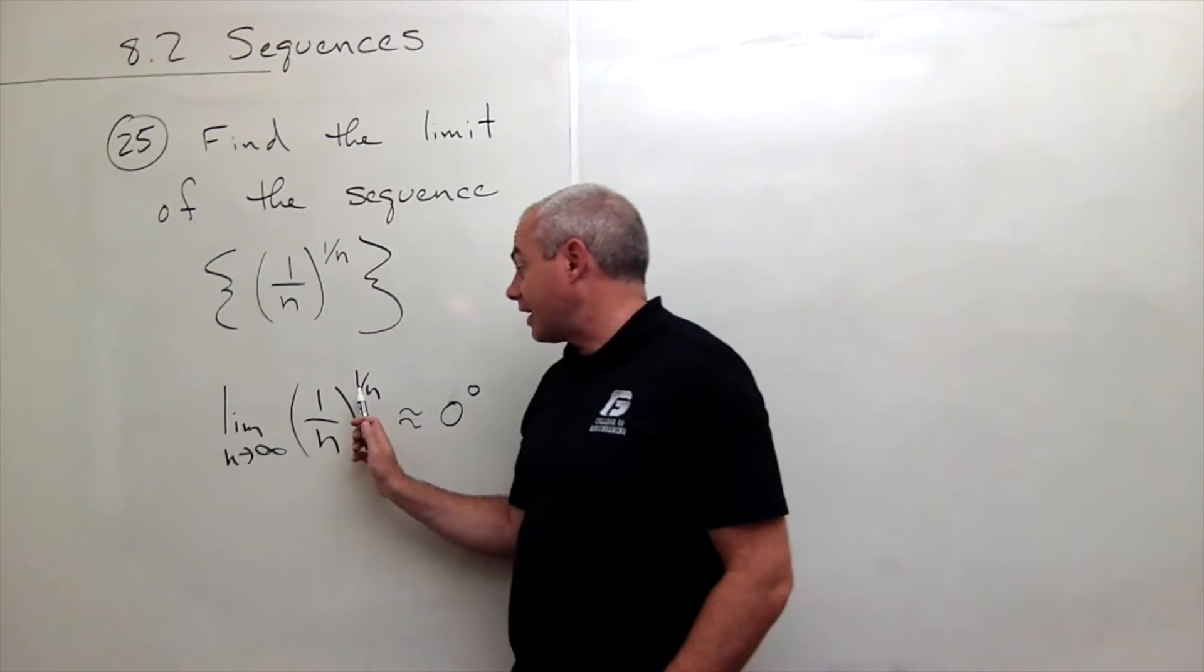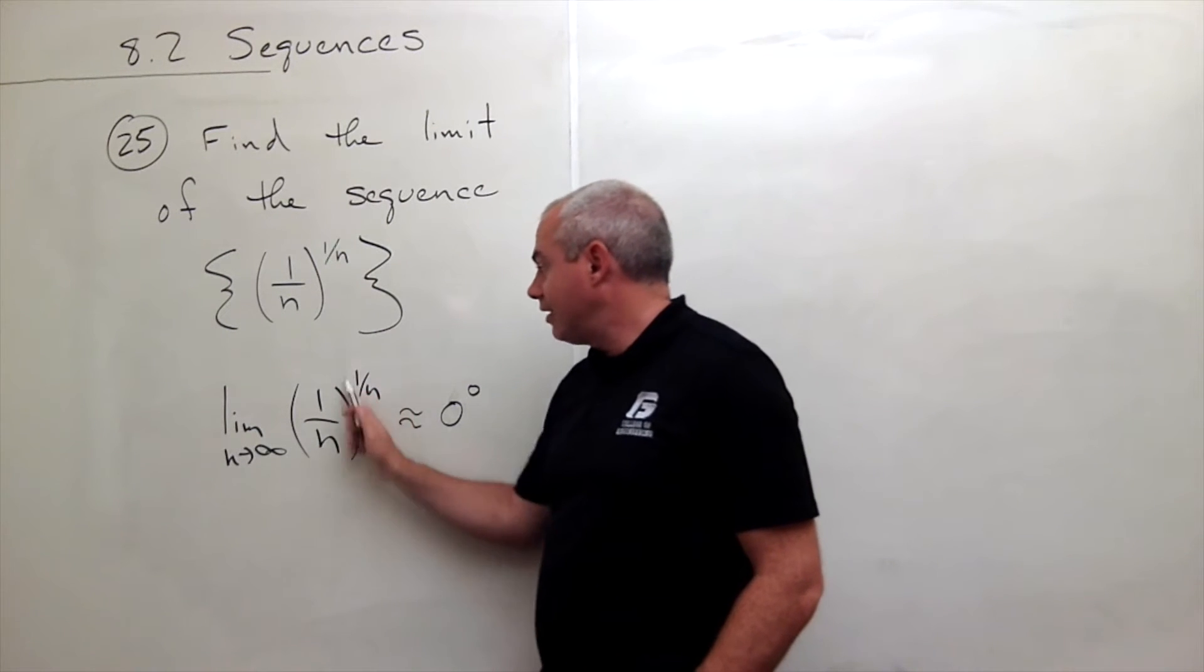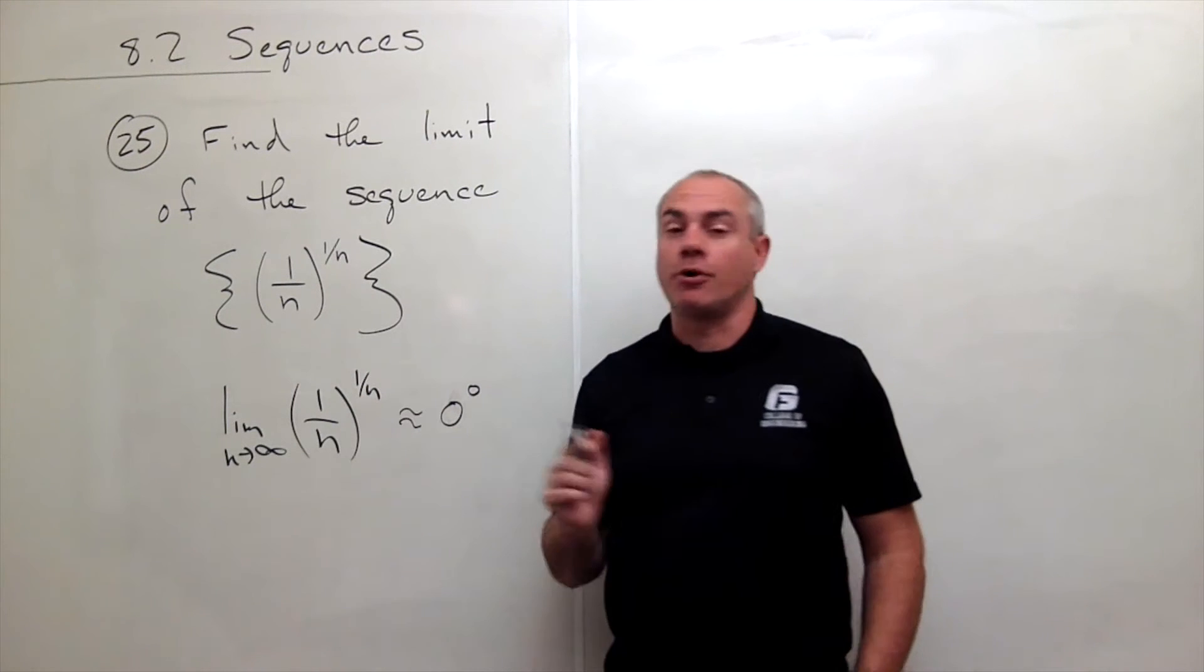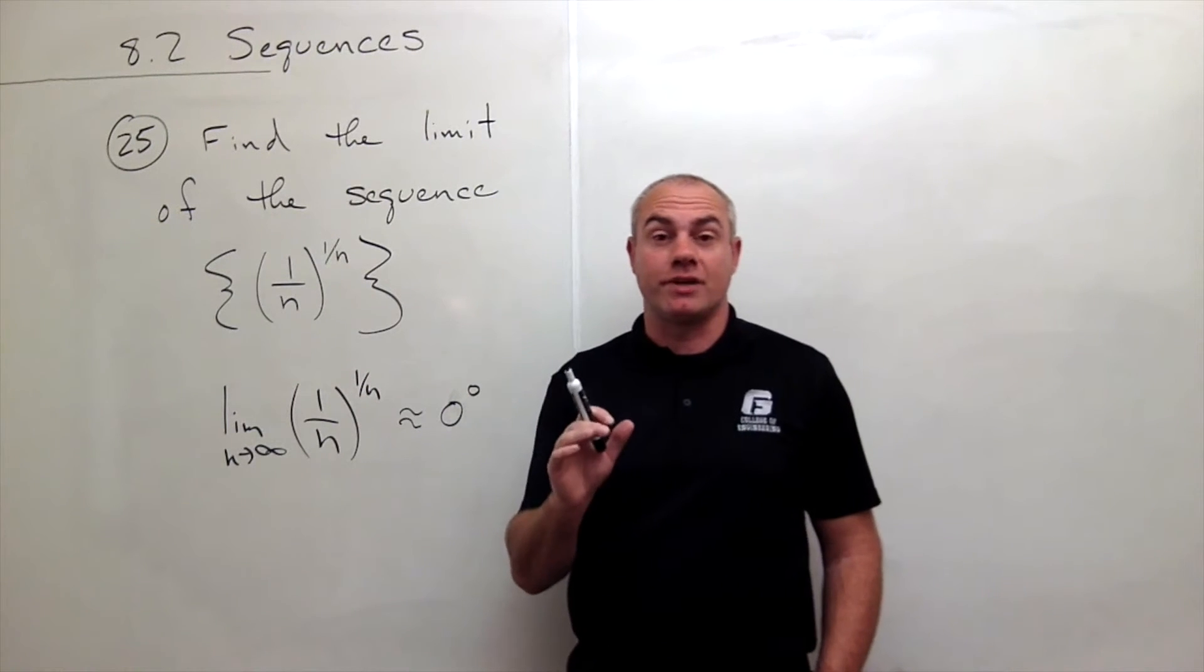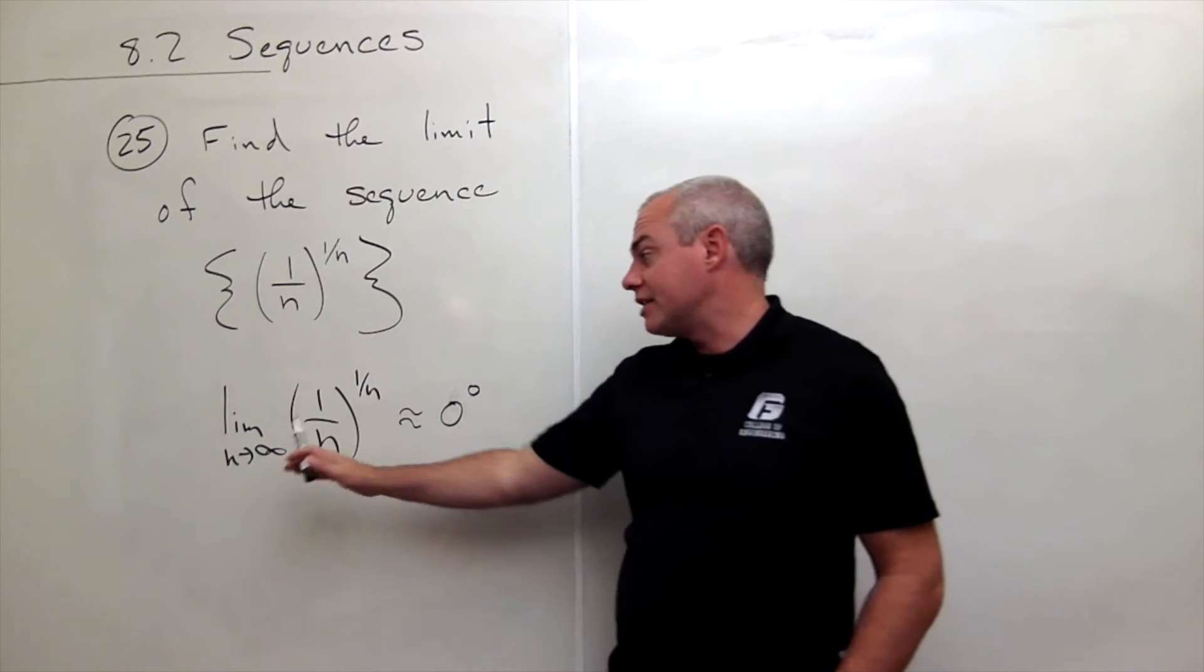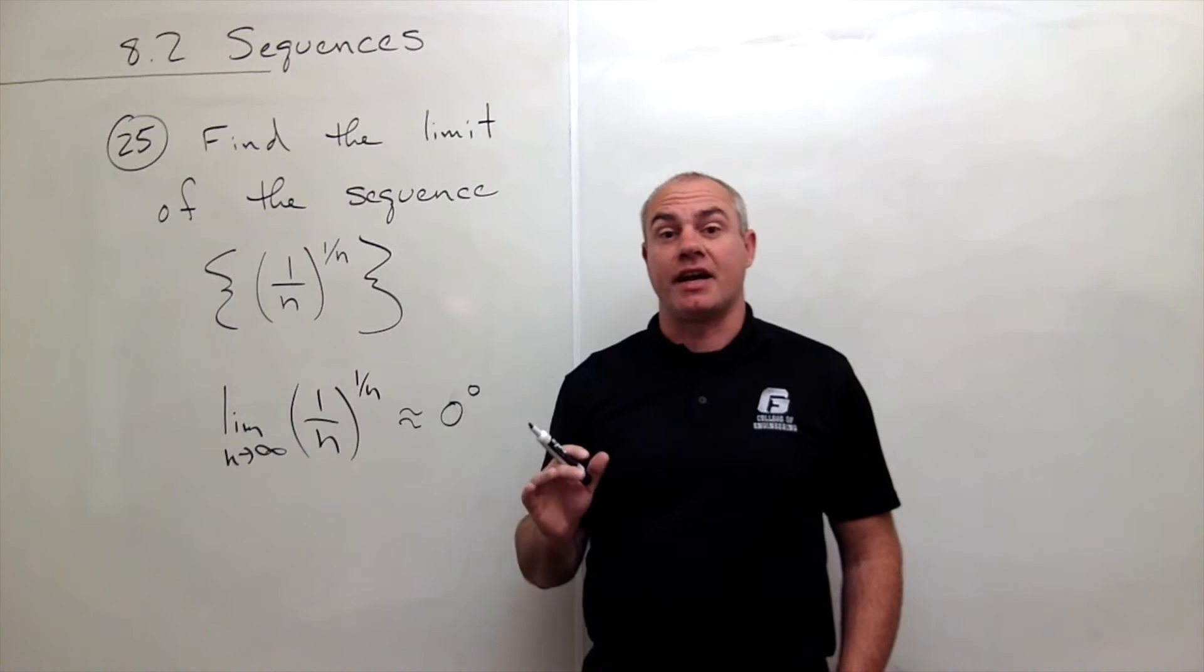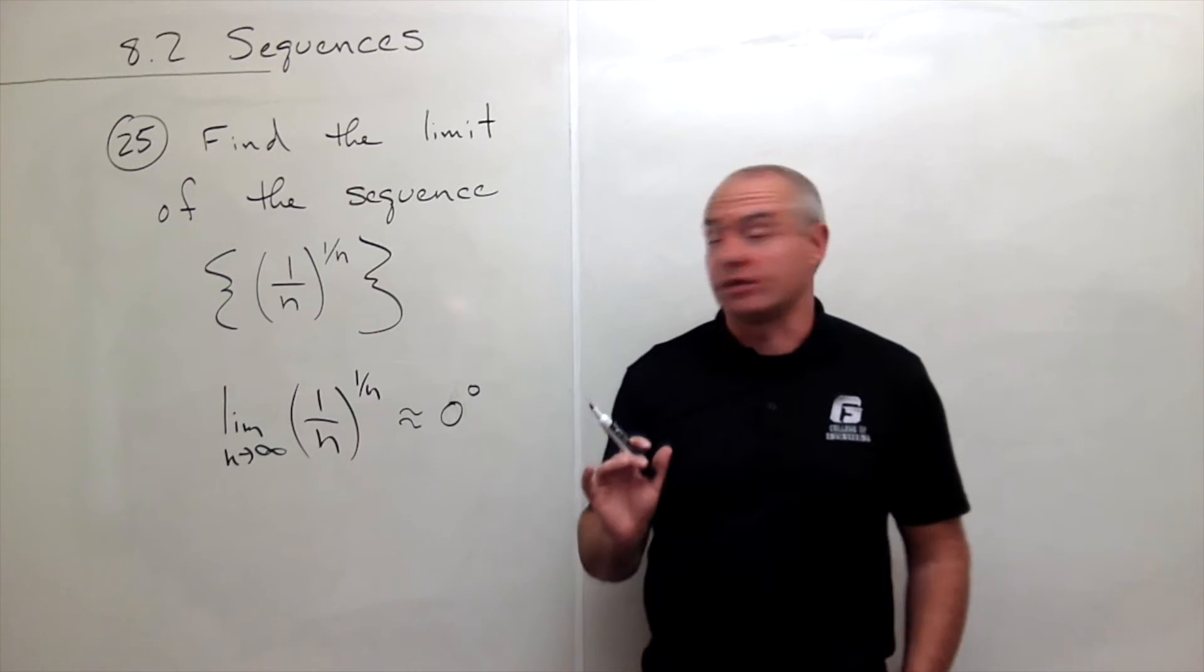The problem is, again, I have an n up in the exponent. And when there are n's in the exponent, what that really tells me to do is take this limit, set it equal to something like L, and then take the natural log of both sides. So let's do that.